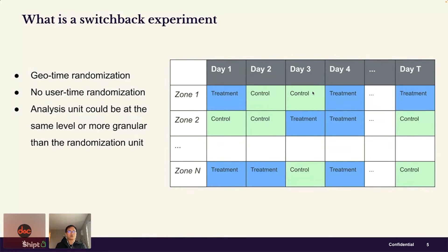What is a switchback experiment? Many of you may have heard of A/B testing, a very common technique used in tech companies to evaluate new products, new designs, or new algorithms. The typical approach is to randomly assign 50% of customers or users into either treatment or control, then measure some outcomes over a certain time period, and compare outcomes between the treatment group and the control group.